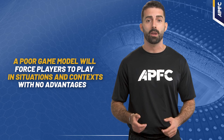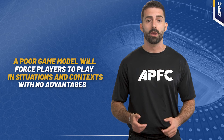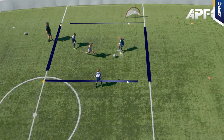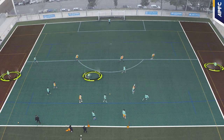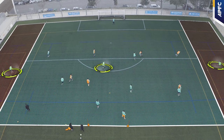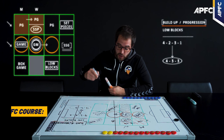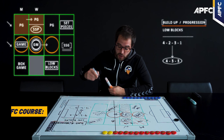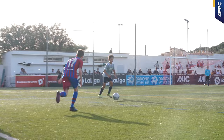A poor game model will force players to play in situations and contexts with no advantages. So how can we implement a game model into our training week? We must identify the situations we will work on and create drills that reproduce these situations with their problems. This will help us find solutions in our training sessions. During the week, we must also work on the game principles that enhance our style and game model.